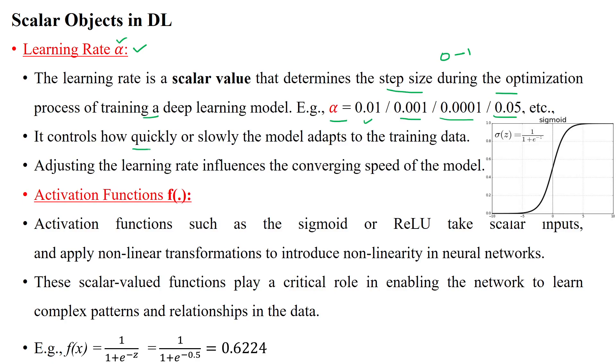This controls how quickly or slowly the model adapts to training data. Adjusting the learning rate influences the converging speed of the deep learning or machine learning model.